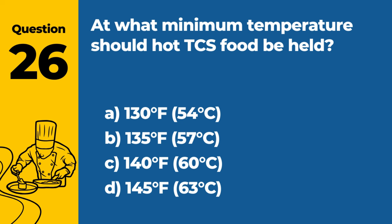Question 26: At what minimum temperature should hot TCS food be held? A. 130°F (54°C). B. 135°F (57°C). C. 140°F (60°C). D. 145°F (63°C). Answer: B. 135°F (57°C). TCS (time/temperature control for safety) food should be held at a minimum temperature of 135°F (57°C) to prevent the growth of harmful bacteria.